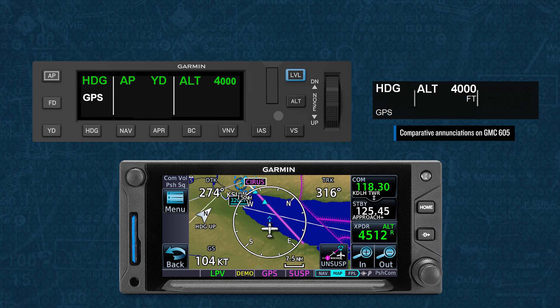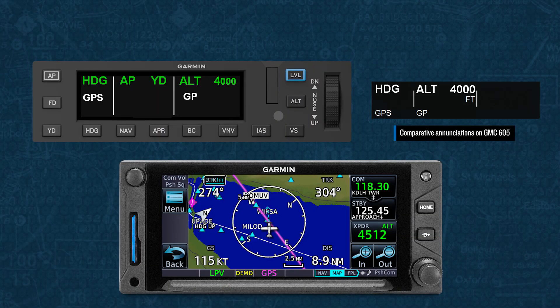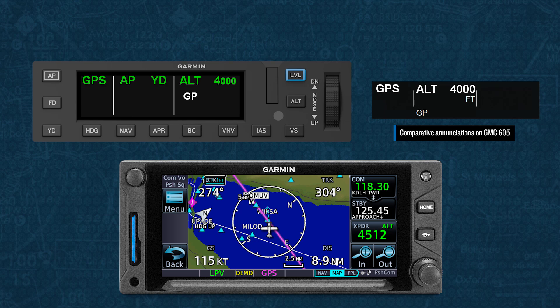If ATC clears us for the approach, the APR button should be pressed, which would arm the GPS course capture and vertical guidance capture — in this case, a glide path annunciation of GP would show in white. Once we capture the inbound course, the white GPS indication moves up and changes to green, showing that it's active. As we near the final approach fix and the vertical deviation indicator nears the center, the white GP annunciation moves up and changes to green, showing that the glide path is captured. Just as with the ILS approach, the autopilot can be used to fly you to the decision altitude, at which point you'll need to disconnect the autopilot and hand-fly the remaining distance to the runway.